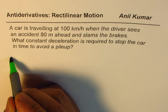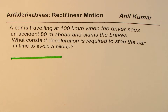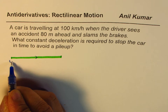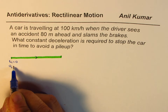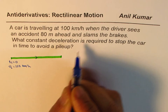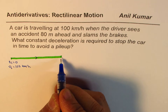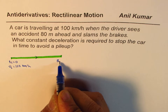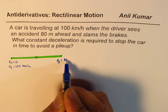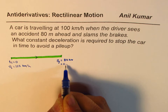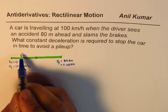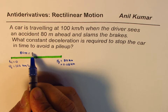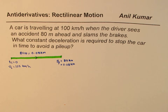Now let's begin by sketching the scenario. Let's say that's the distance which the car moves, and initially that's the direction. At t equals 0, the car is traveling at 100 kilometers per hour. When the driver sees an accident 80 meters ahead, the final distance is 80 meters, which I could write as 0.08 kilometers.